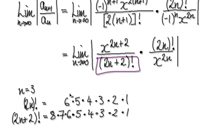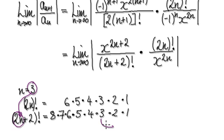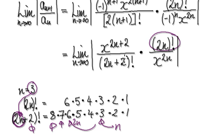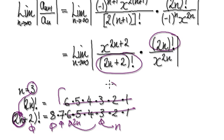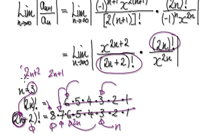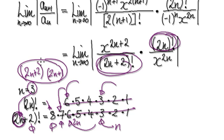Now looking at this: when n equals 3, if you put it into (2n+2), you get 6 plus 2, which is 8. So this is your n, when you times by 2 that gives you 6 — that's 2n — and then plus 2 means plus one extra and then plus another extra. So you can see that this thing here cancels out with this thing here. If this is n and this is 2n, then this number 7 here will be 2n+1, and this number 8 here will be 2n+2. So you can see that this will cancel out with this.